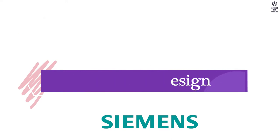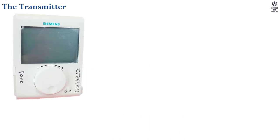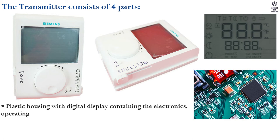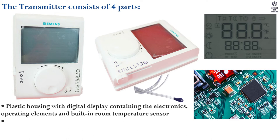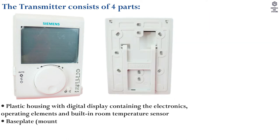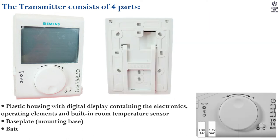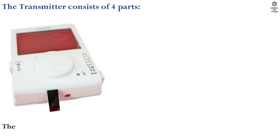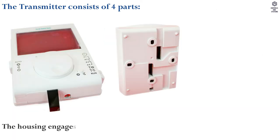Mechanical design. The transmitter consists of four parts: a plastic housing with digital display containing the electronics, operating elements and built-in room temperature sensor; a base plate; a battery compartment; and a foldout stand. The housing engages in the base plate and snaps on.